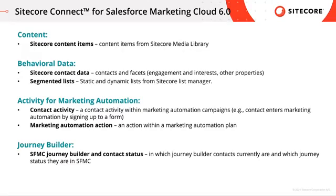When we talk about Behavioral Data in the Behavioral Data Exchange part of the connector, we're referring to Sitecore Contact Data such as Contacts and Facets. Examples can be engagements that our customer had on the Sitecore website, or their identified interests and other properties. And secondly, Segmented Lists — static and dynamic lists from Sitecore List Manager.